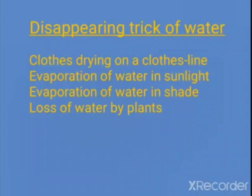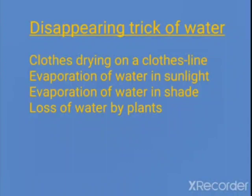Evaporation takes place faster when heating water on a burner. There are also other processes involved, such as loss of water by plants. Plants use a part of water to prepare their food and retain some of it in their parts. The remaining water is released by the plants into the air as water vapor through the process of transpiration. Water vapor enters the air through the processes of evaporation and transpiration.